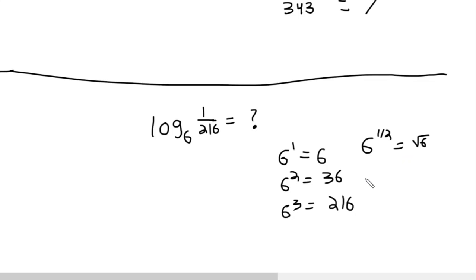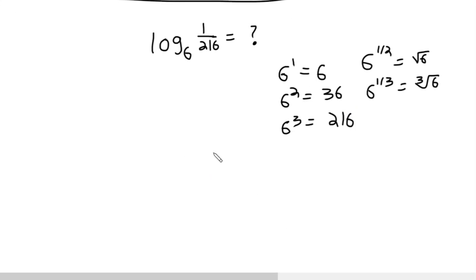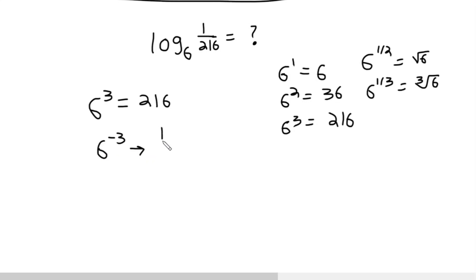Maybe we can try a fraction as an exponent. The square root of 6, the cube root of 6 — neither of these gives us a fraction. So when the number you're taking the log of is a fraction, you want to start thinking of negative exponents. Look at 6 to the 3rd equals 216. If I raise this to a negative 3, that's the same as 1 over 6 cubed, which is 1 over 216.